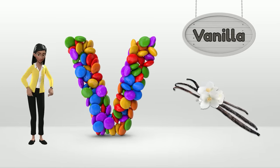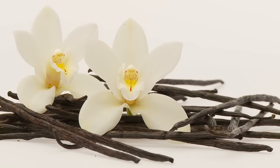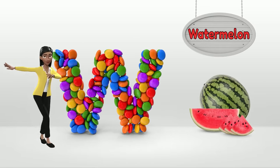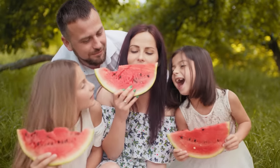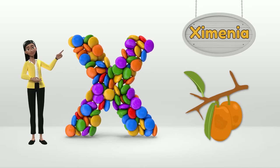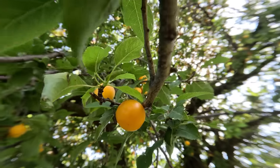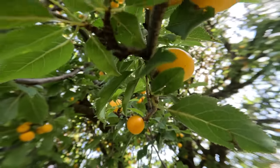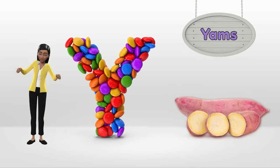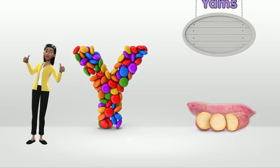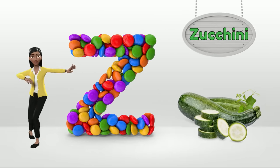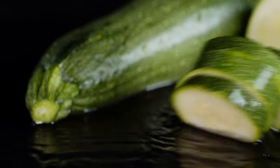V is for Vanilla. V, V, Vanilla. W is for Watermelon. W, W, Watermelon. X is for Ximenia. X, X, Ximenia. Y is for Yams. Y, Y, Yams. Z is for Zucchini. Z, Z, Zucchini.